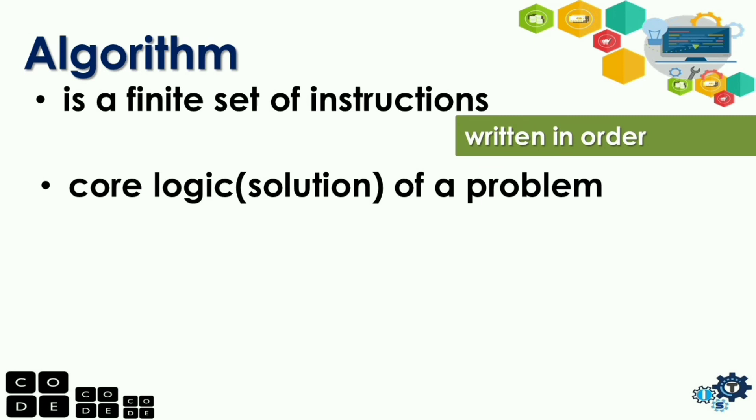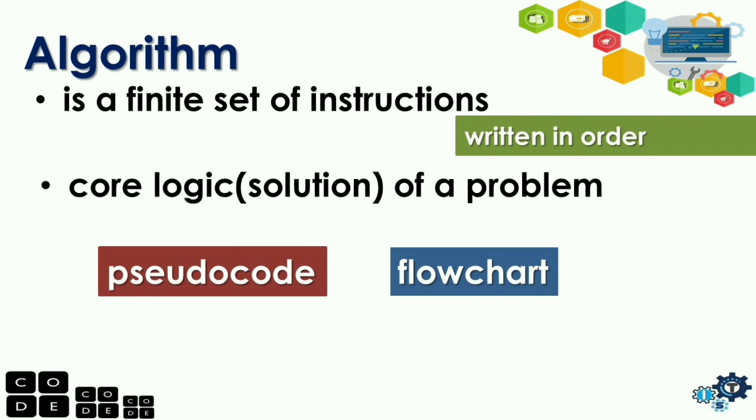The basic two types of algorithm, we have pseudocode and flowchart. For the pseudocode from the word, pseudo means false. So, ibig sabihin nyan guys, it is a false code. So, what are the false codes? It can be a combination of English language and a programming language as long as naiintilihan mo kung ano yung logic mo.